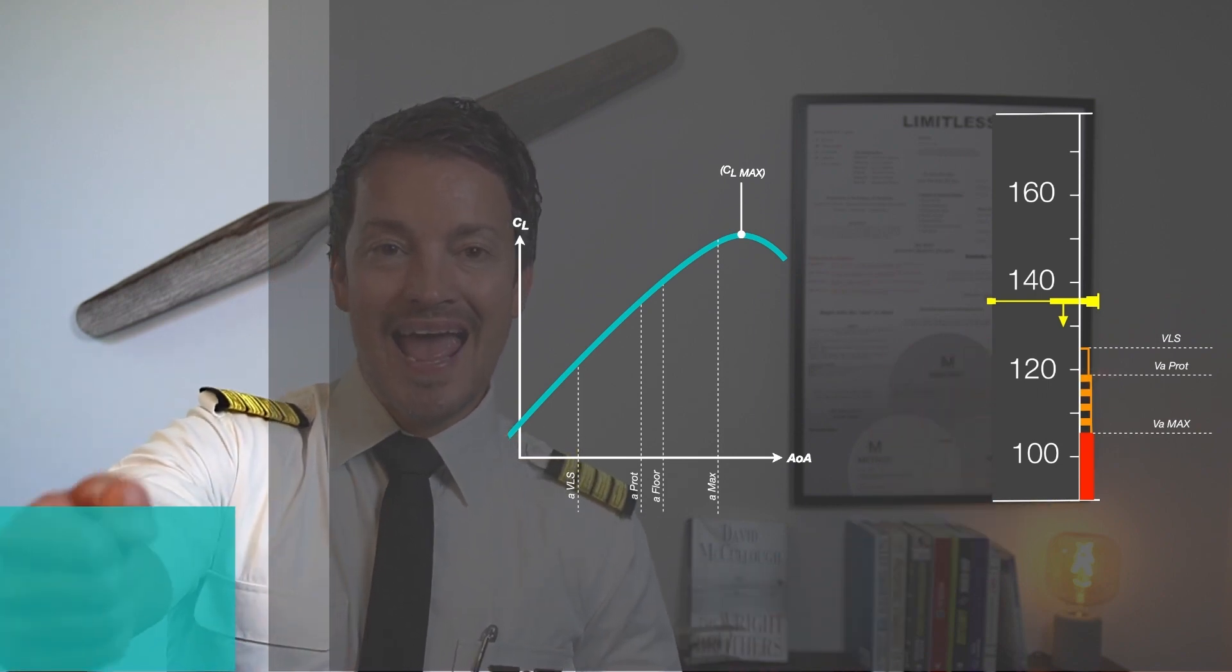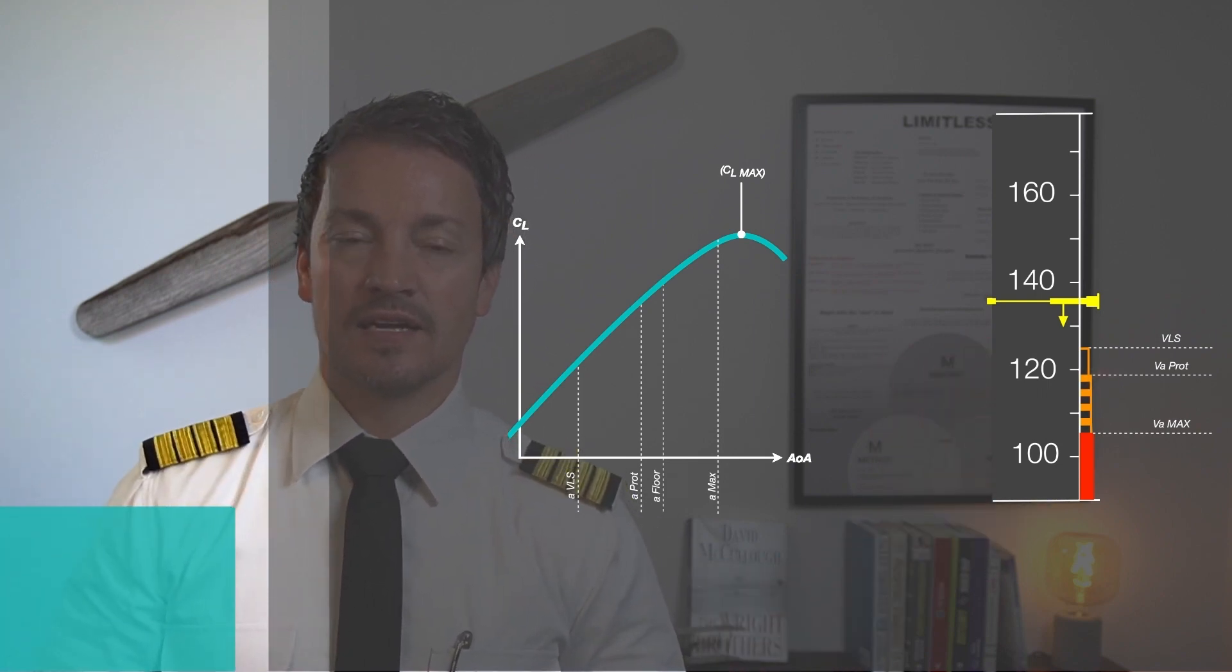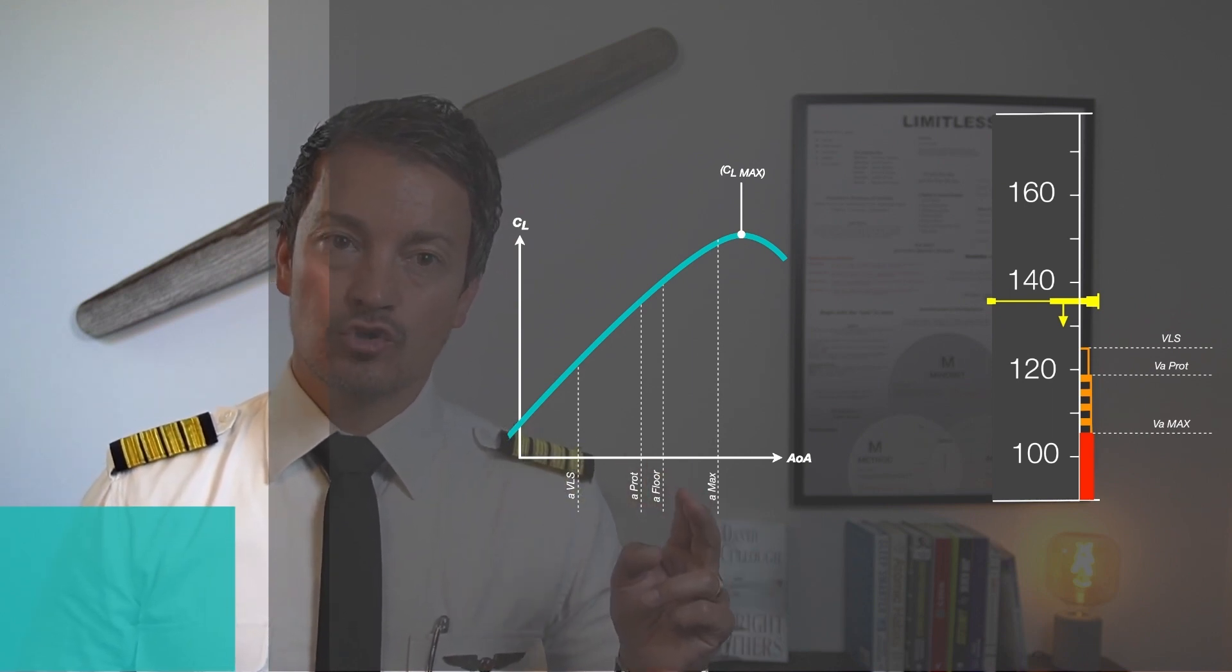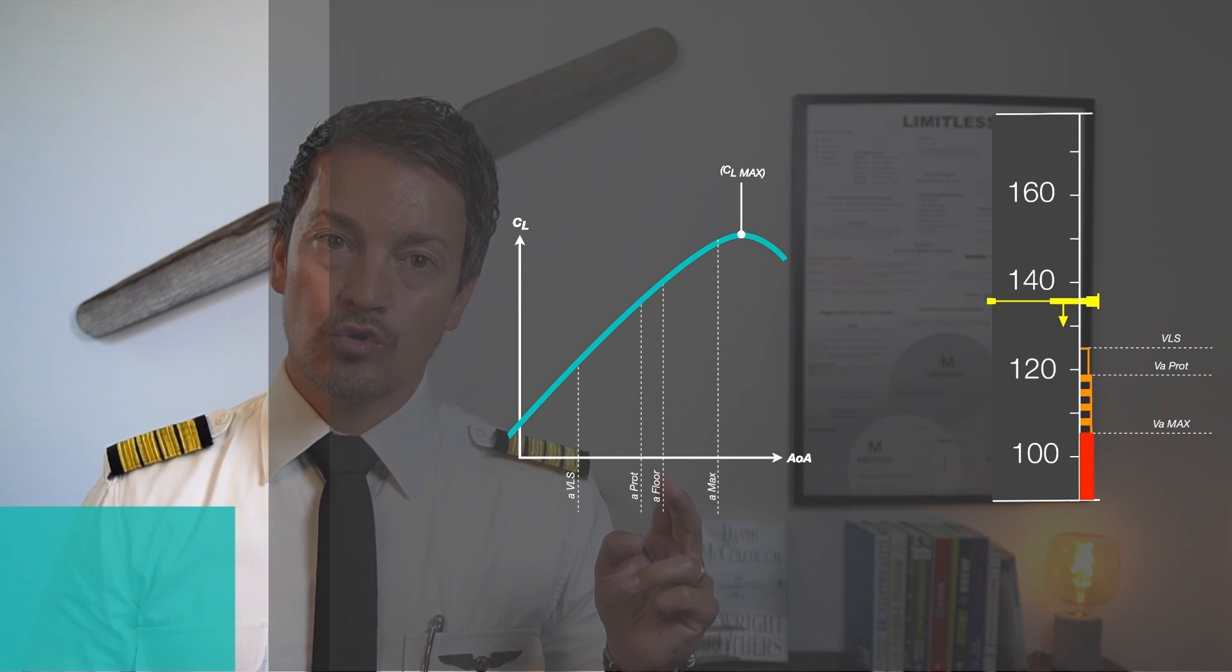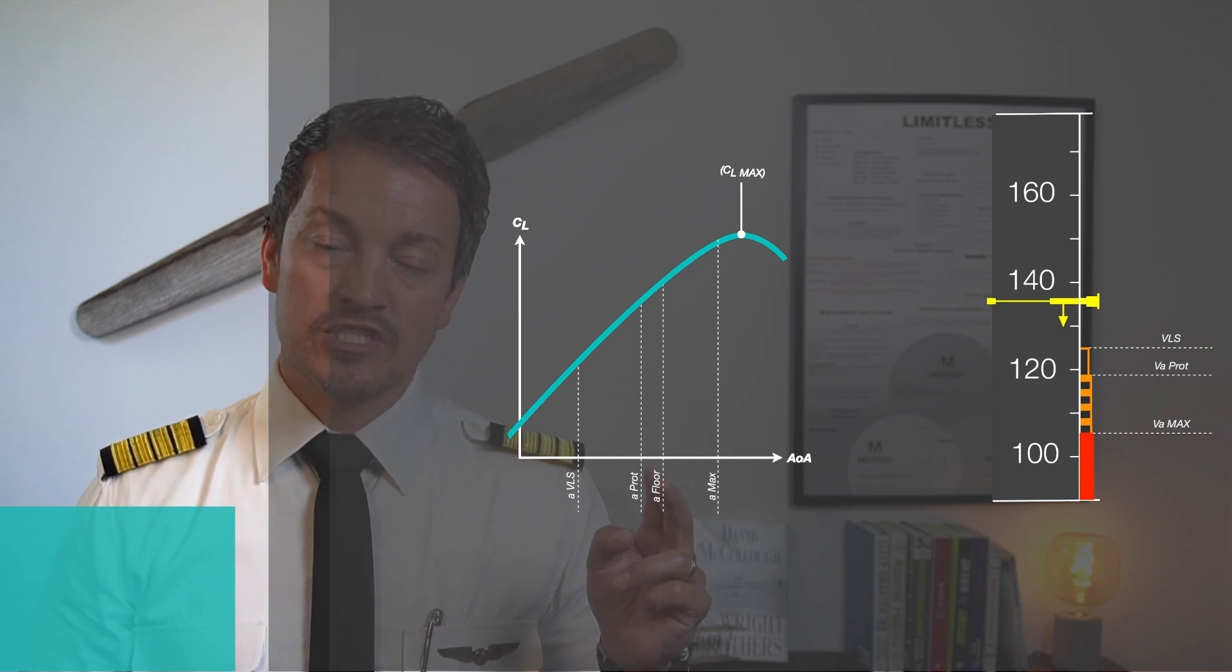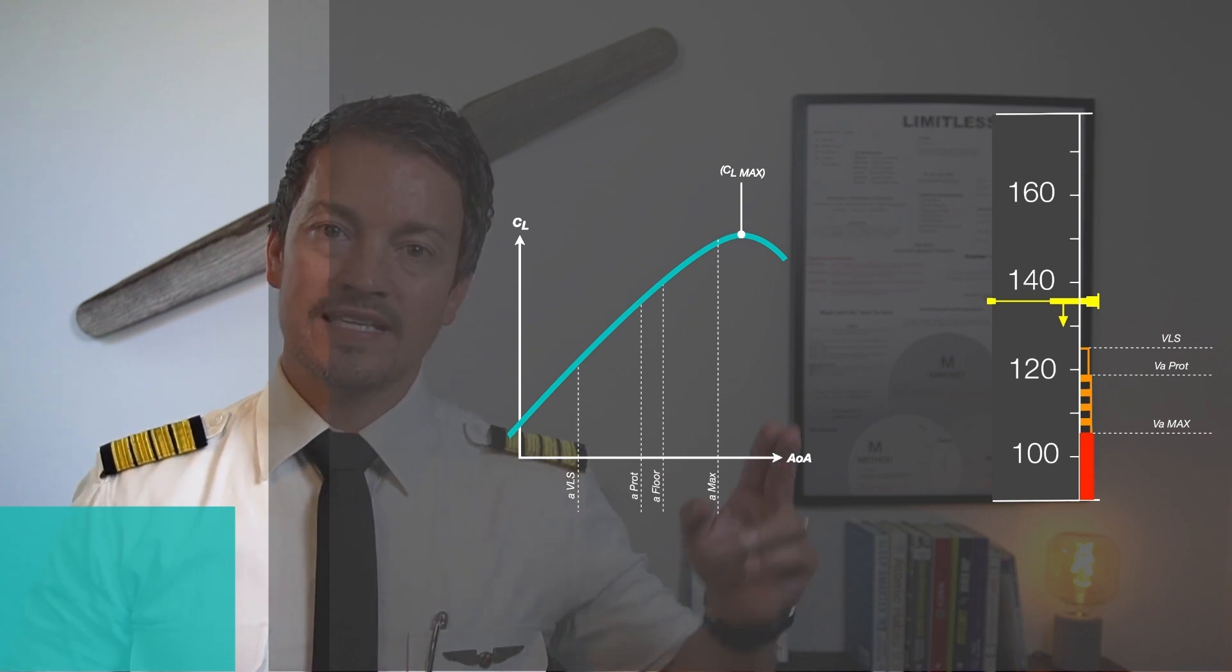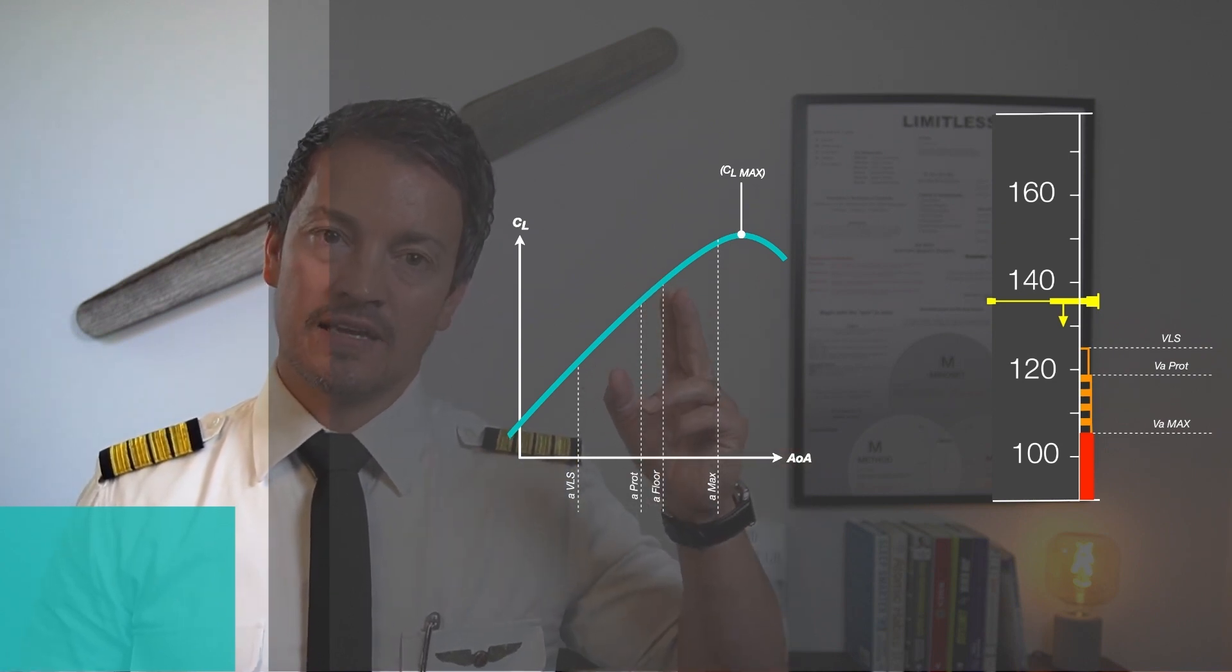V-alpha floor is not a flight control protection, it is actually an autothrust protection, which is tied together with the high angle of attack protection. When V-alpha floor kicks in at a certain angle of attack, the autothrust will command maximum power on the engine,